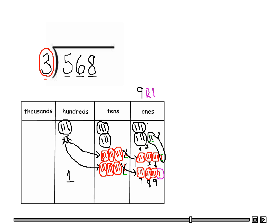Now let's look in the tens place. We have one, two, three, four, five, six, seven, eight groups of three in the tens place. So we write the number eight here. And as identified earlier, we only have one group of three in the hundreds. So this is my answer: 189 with a remainder of one. I write this on the bar — nine ones above eight, eight above six because that's in the tens, and one above the five because it is in the hundreds place.